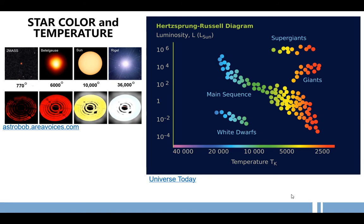As you can see in the picture, we have the first star, which is Antares, which is 770 degrees Celsius, color dark red, followed by Betelgeuse, which is red, which has a surface temperature of 6,000 degrees Celsius. Our sun, and Rigel, which is the hottest, 36,000 degrees Celsius, which is color blue.